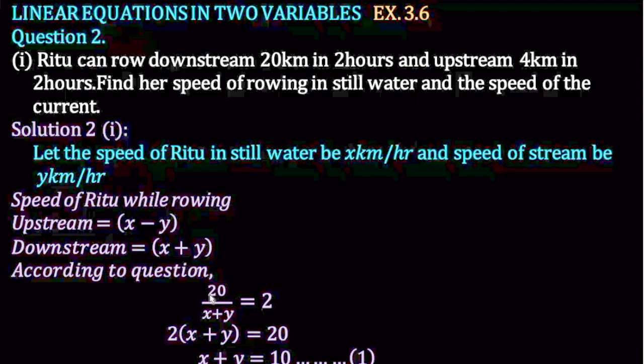20 distance hai and speed is x plus y equal to 2 hours. Solve karne par, 2 into x plus y equal to 20 and 2 se divide kar denge, toh x plus y equal to 10.